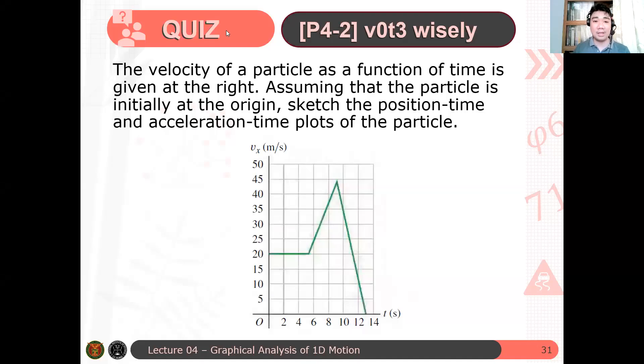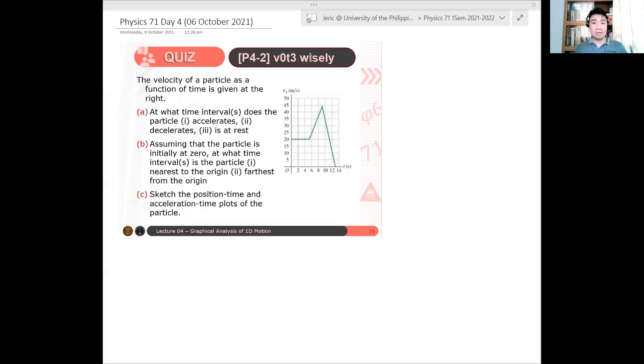So let's have another example here. Let me read the problem. The velocity of a particle as a function of time is given below. Assuming that the particle is initially at the origin, sketch the position-time and acceleration-time graphs of the particle. This is a bit challenging because we are given the velocity-time graph, not the position-time. Here's our problem in OneNote. I'll just do letter C - sketch the graphs.